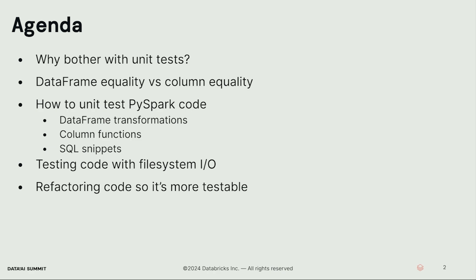Here's what we're going to talk about. We're going to talk about why we even bother with unit tests in the first place — what value do they bring us? We'll talk about DataFrame equality versus column equality at a high level, and how those form the basis of a lot of our unit testing. We'll chat about how to unit test PySpark code — specifically DataFrame transformations, column functions, and SQL snippets. We're going to talk about how to unit test SQL snippets, testing code with file system IO, and also refactoring your code so it's more testable.